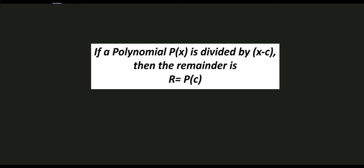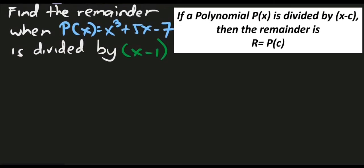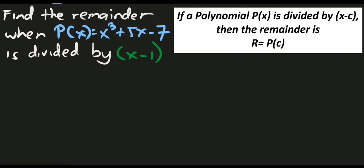Let's try to solve some problems that will illustrate this theorem. We are asked to find the remainder when P of x equals x cubed plus 5x minus 7 is divided by x minus 1.